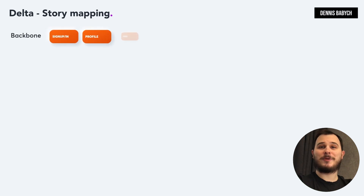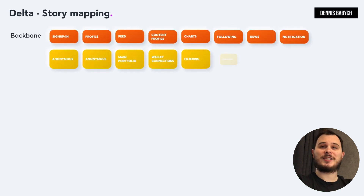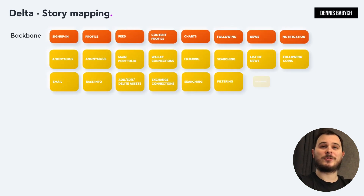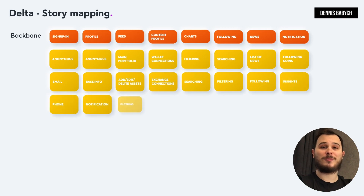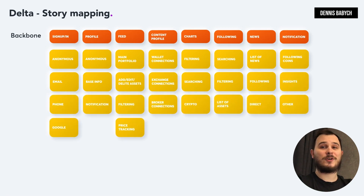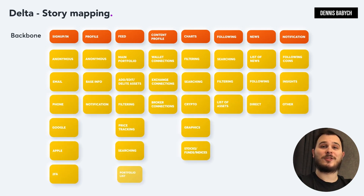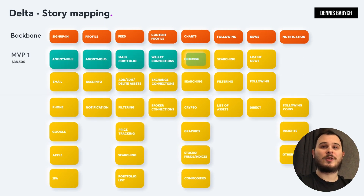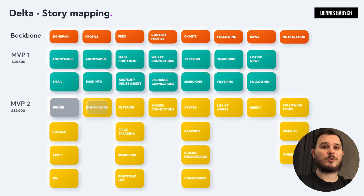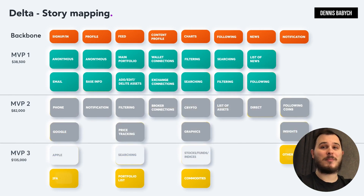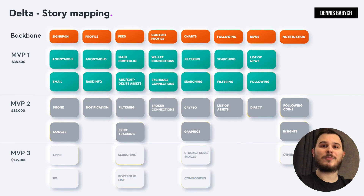Creating a story map can help you efficiently select the essential features needed to build your minimum viable product and prioritize functions that can be developed and launched quickly. The focus should be on limited functionality with the most critical features. It's also important to create a separate story map for each user type to ensure that all their specific needs are met.